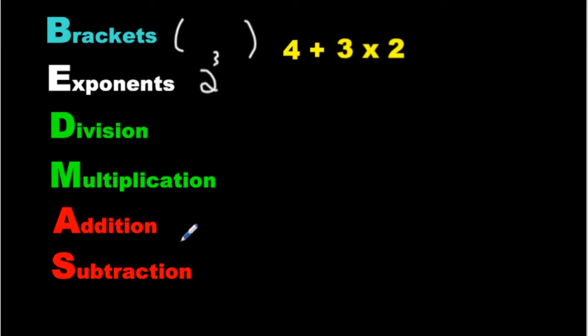After you've done that, the last thing you do is addition and subtraction in the order that they appear, which is why they're the same color. So if subtraction appears first, you do subtraction first. Now, for those of you who got 14 as an answer, what you did was, the mistake you made, was you added before you multiplied, where in the BEDMAS system, you have to multiply first.